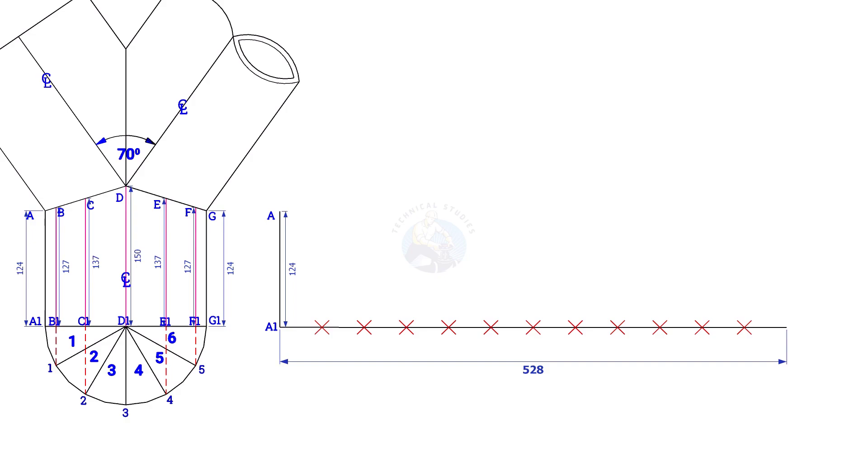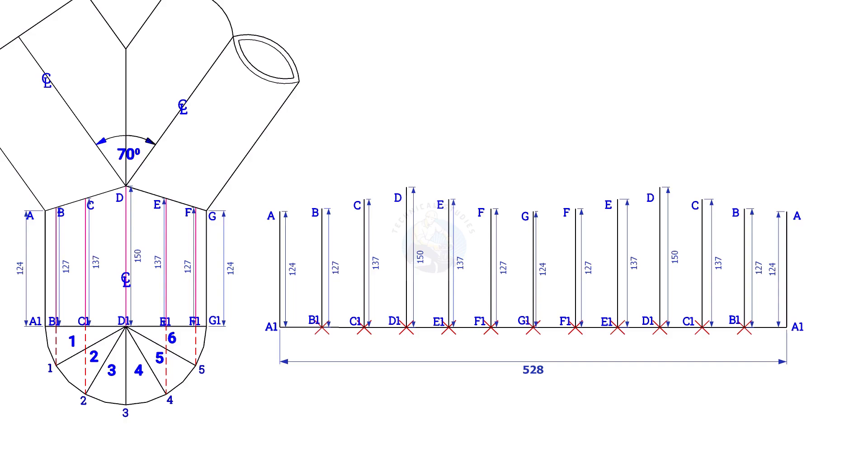Similarly, draw lines B, B1, C, C1 etc. Draw a smooth curve starting from A to A. You may need to add or reduce additional length to achieve the required length of the header.